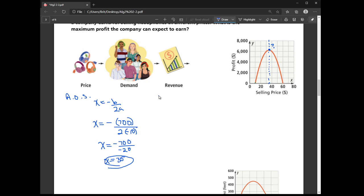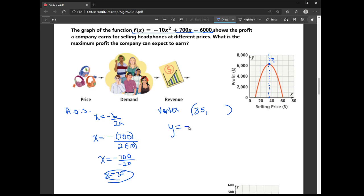So now let's go ahead and find the actual vertex. So I'm going to take that X value, okay, that 35, and I'm going to plug it in to find my Y value. So I get Y equals negative 10 times 35 squared plus 700 times 35 minus 6,000.